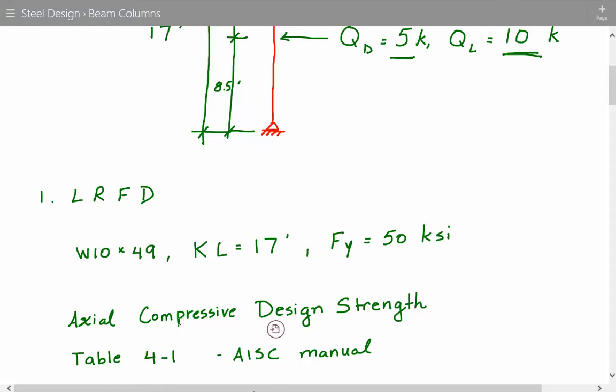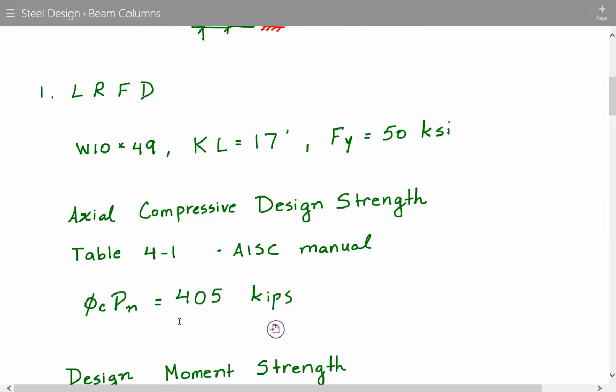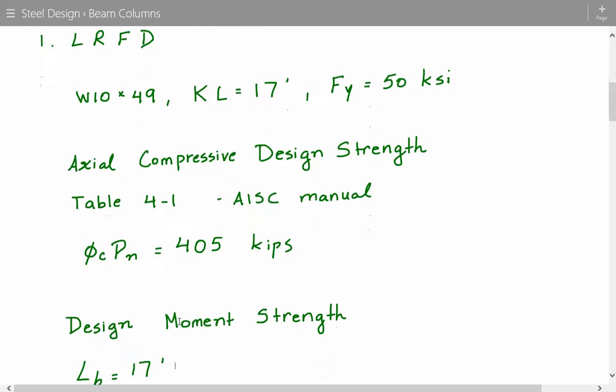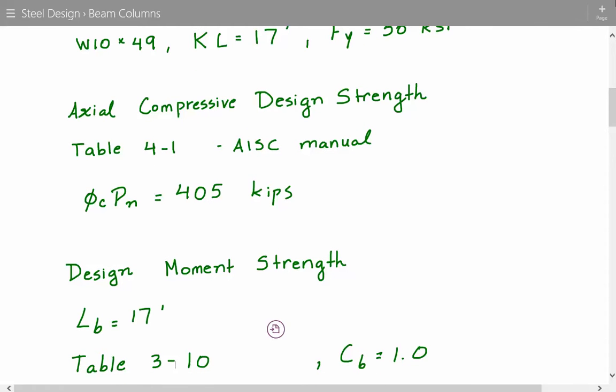So 405 kips is the axial strength. And now to get the design moment strength, since bending is about the strong axis, we can get the design moment strength from the beam design charts in part 3 of the manual, table 3-10. So the unbraced length is 17 feet. And if we go to table 3-10...